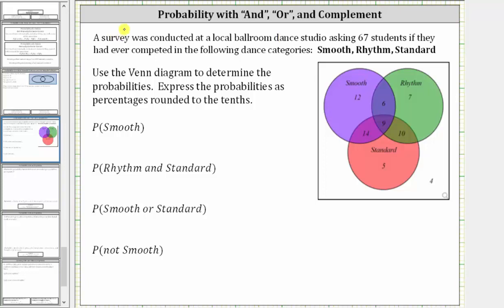A survey was conducted at a local ballroom dance studio asking 67 students if they had ever competed in the following dance categories: smooth, rhythm, and standard. Use the Venn diagram to determine the probabilities, express the probabilities as percentages, rounded to the tenths.